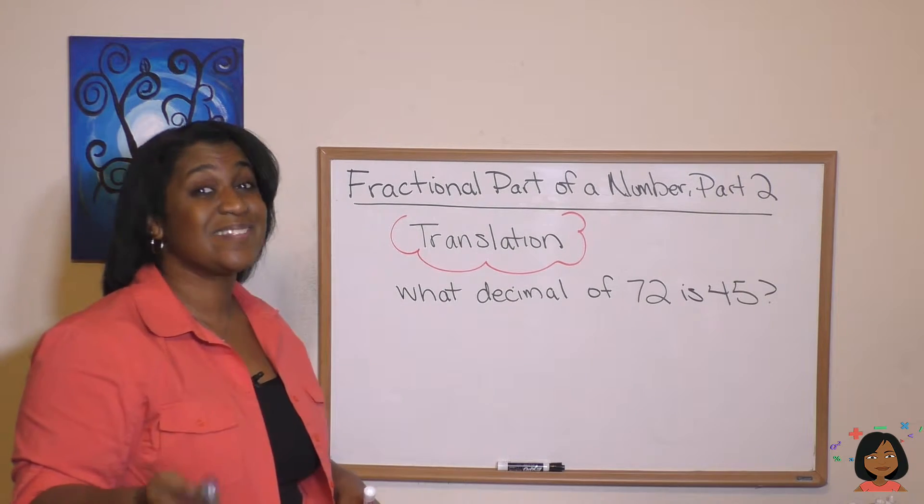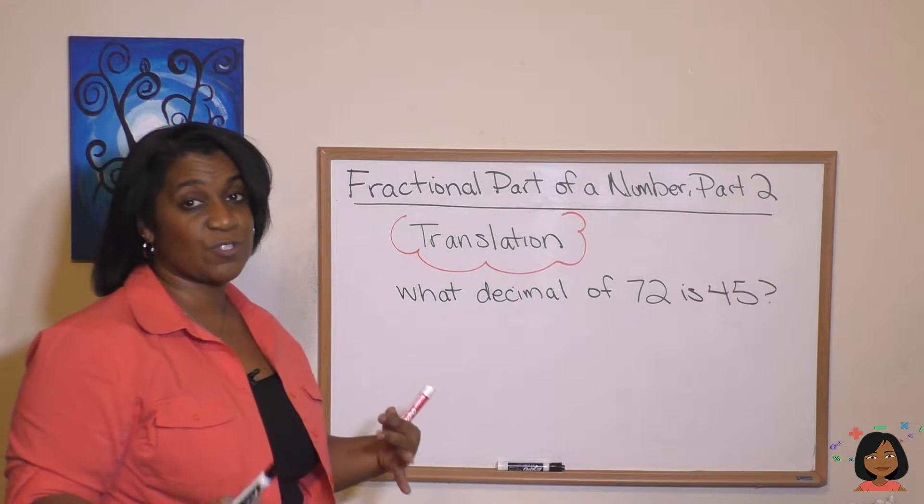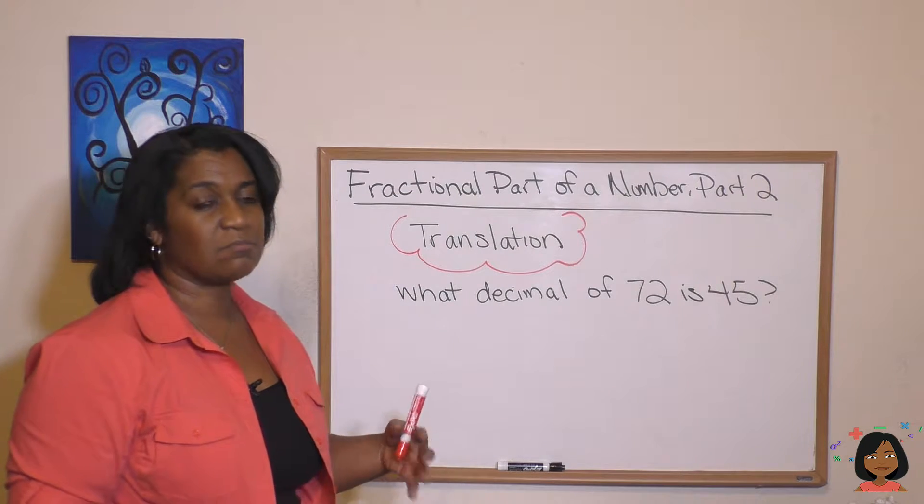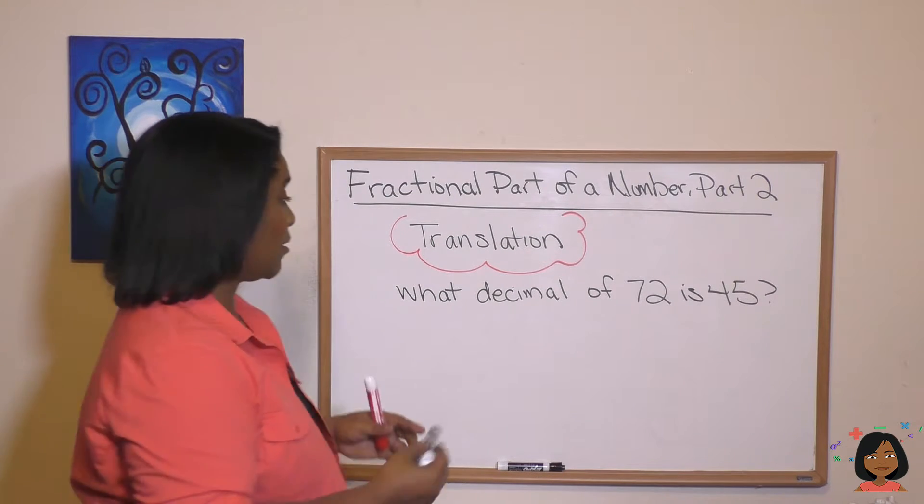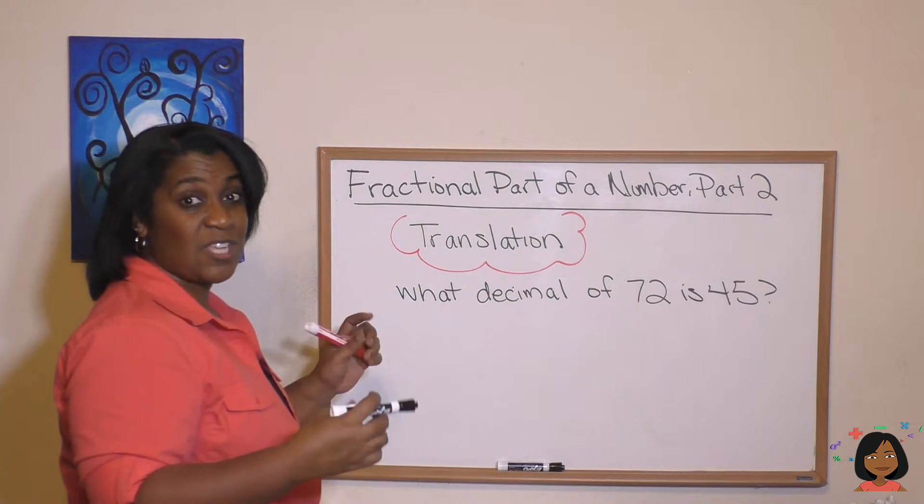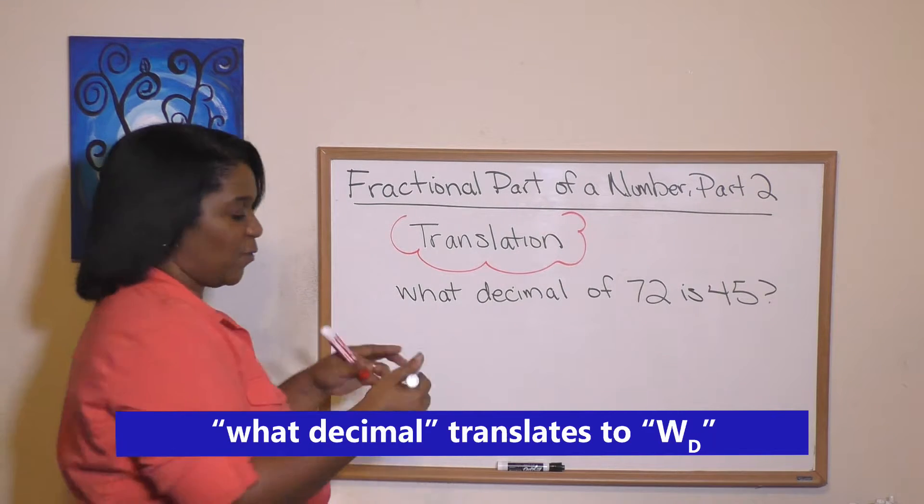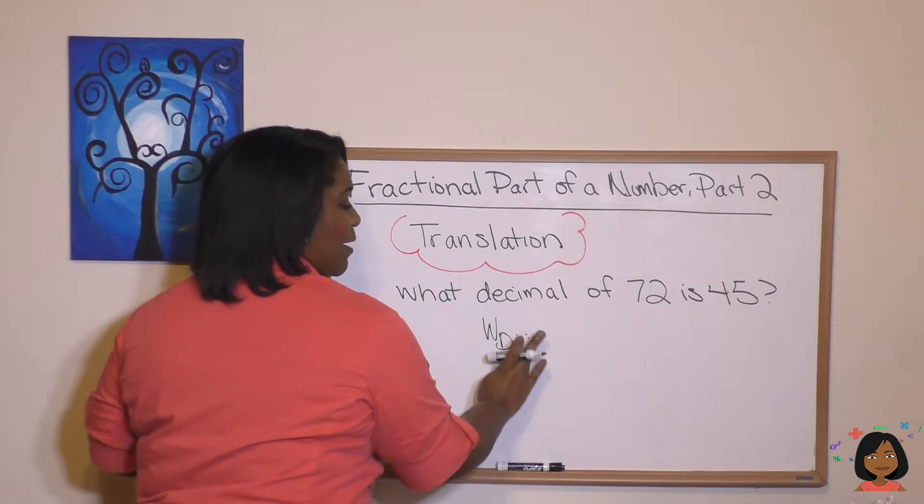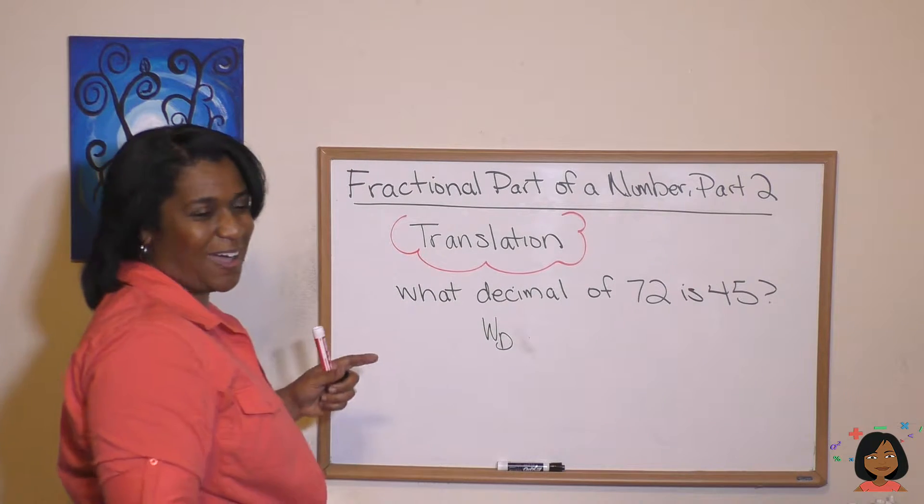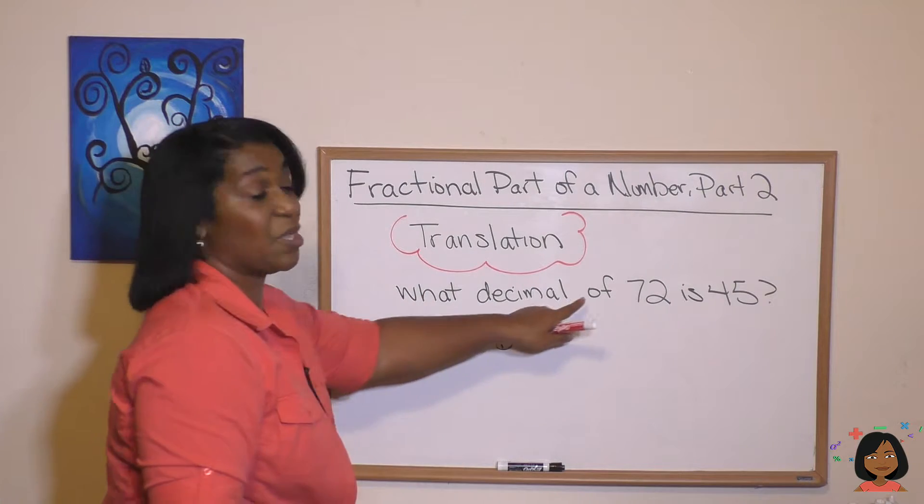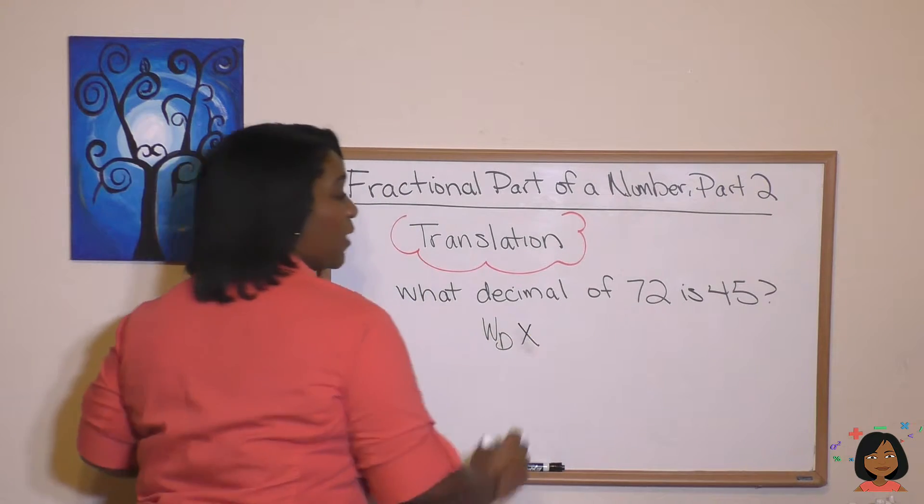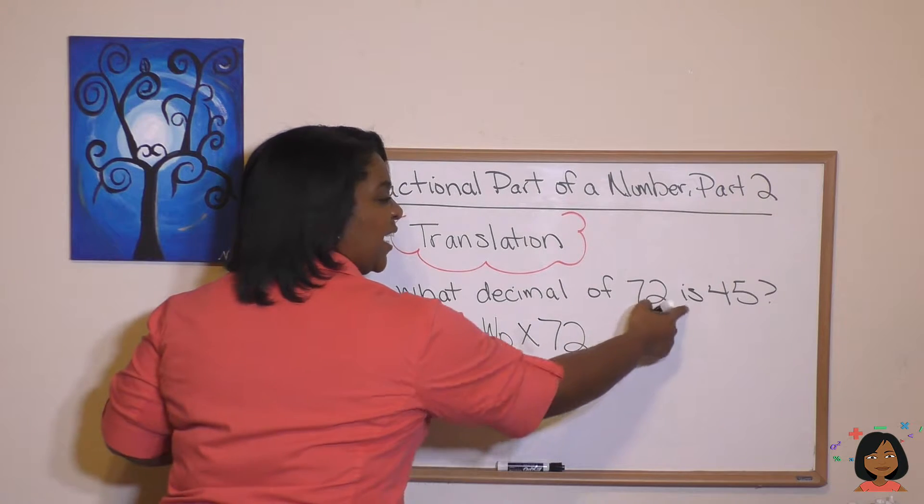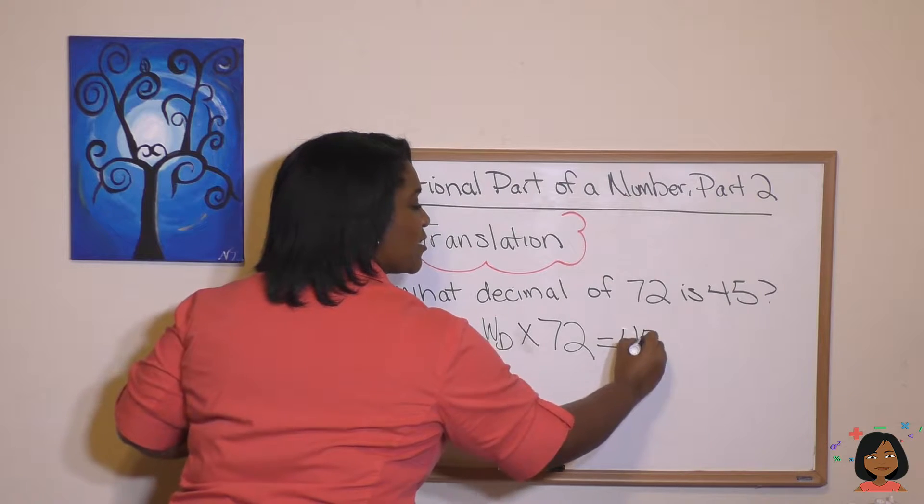What if we wanted to know what decimal of 72 is 45? So same numbers, but instead of asking for a fraction, we're asking for a decimal. Well, looks very similar. So instead of writing WF for what fraction, we're going to write WD for what decimal. It says what decimal of, we know of means multiply, and then we can put our 72 in is 45. So that's our statement.